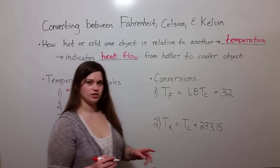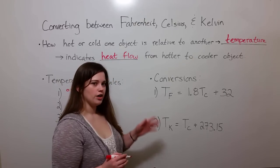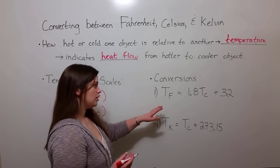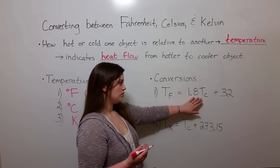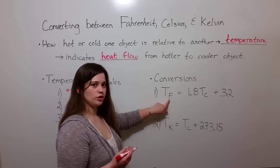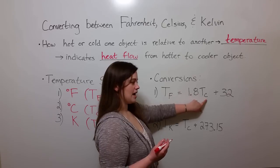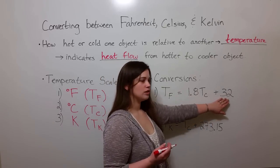So now let's talk about the calculations themselves. How do you convert from one temperature scale to another? To convert from Celsius to Fahrenheit, you use this equation. That is, the temperature in Fahrenheit is equal to 1.8 times the temperature in Celsius plus 32.